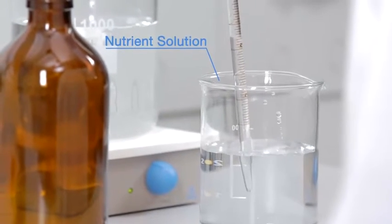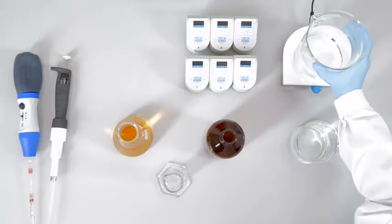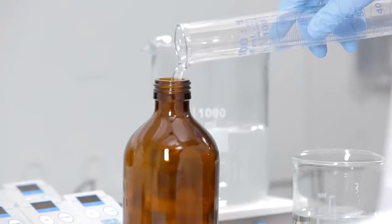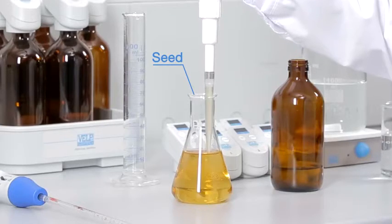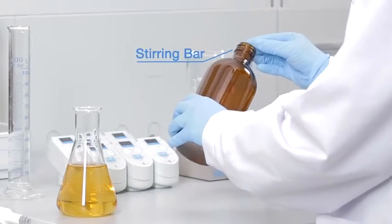The sample may require some pretreatment activities, such as homogenization, pH adjustment, dilution, nutrient addition and seeding, before being transferred to a dark glass bottle containing a magnetic stirring bar.